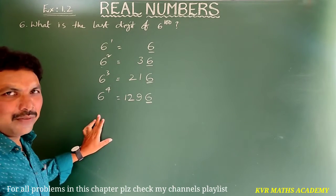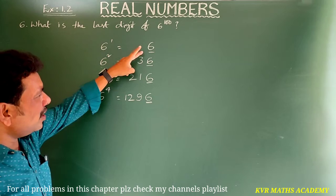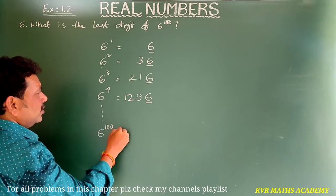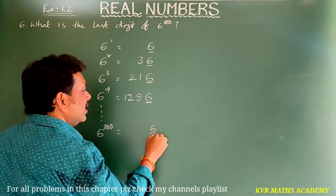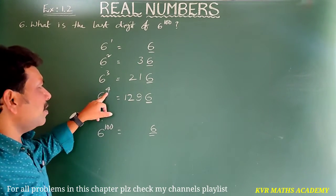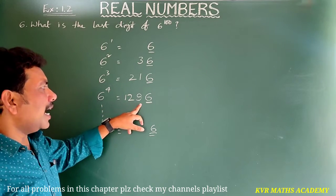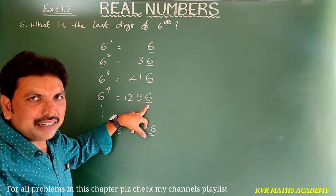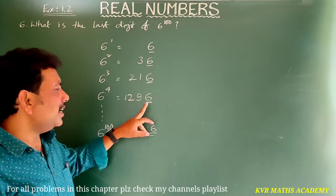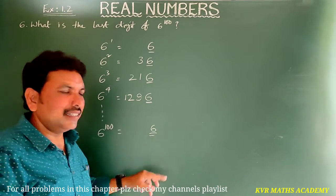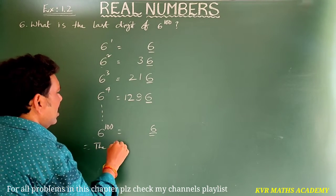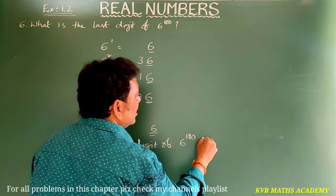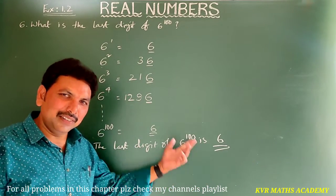So whatever power of 6 you take, the last digits are all 6 only. Up to 6 power 100, the last digit is also 6. Because when you multiply by another 6, the last digit 6 only will appear. Therefore, the last digit of 6 power 100 is 6. Have you understood? Note it down.